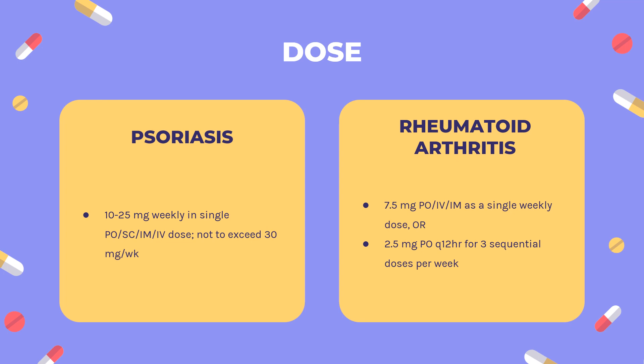Psoriasis: For symptomatic control of severe, recalcitrant, disabling psoriasis in adults not adequately responsive to other forms of therapy, use only with a diagnosis by biopsy and/or after dermatologic consultation. Initial: 10–25 mg weekly in a single PO/SC/IM dose, not to exceed 30 mg per week; gradually adjust dose to achieve optimal clinical response; use the lowest dose and longest rest period possible, with return to conventional topical therapy encouraged. Trexall may give weekly dose divided as 2.5 mg PO Q12HR for three sequential doses. Otrexup SC: if used as initial therapy, start at lowest available dose, i.e., 10 mg SC Q-week. Rasuvo or Reditrex SC: 10–25 mg SC once weekly. Administer folic acid or folinic acid to reduce the risk of methotrexate adverse reactions.